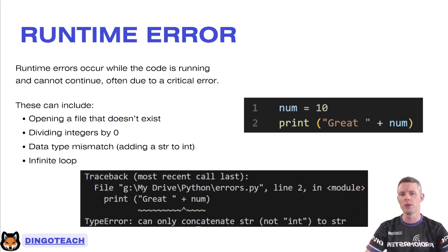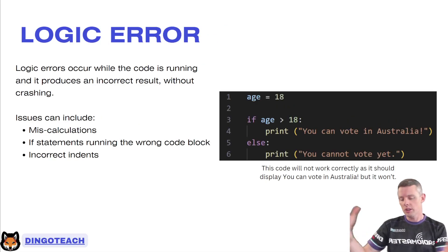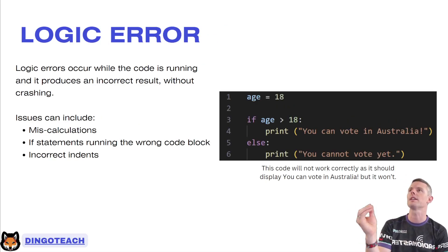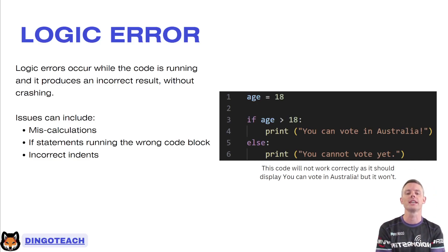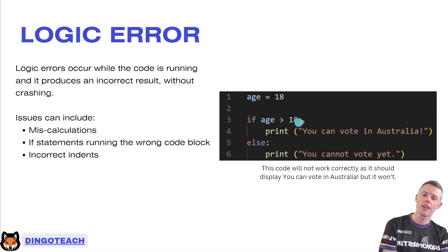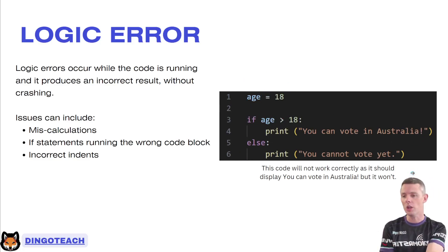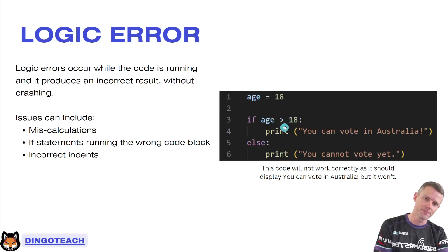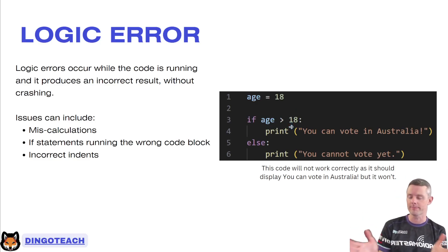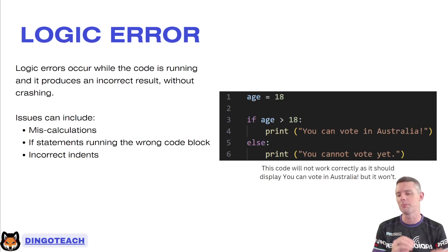Logic errors are just where you make a mistake or forget one little thing — an if statement fires off the wrong way, or maybe you didn't indent something correctly so a line of code belongs to the wrong if statement. The most important thing is it does not crash. In this example, I said age equals 18, if age is greater than 18 you can vote in Australia, otherwise you cannot. There's a logic error — if you are 18, my code will tell you you can't vote. You can vote when you're 18 in Australia, so this should be greater than or equal to, or change it to greater than 17. That's the idea of a logic error: it doesn't crash, it just misbehaves — it's a bug.